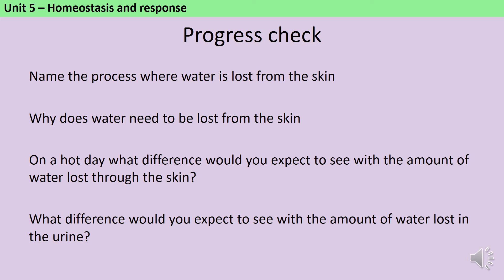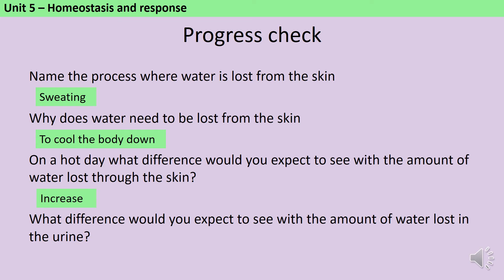The process where water is lost is sweating, and it needs to be lost in order to cool the body down. On a hot day, because your body temperature is going to increase and you're going to need to cool down more, you will lose more sweat. Because the total amount of water you lose in a day is unlikely to change, if you're sweating more then the amount of urine you produce will need to decrease.